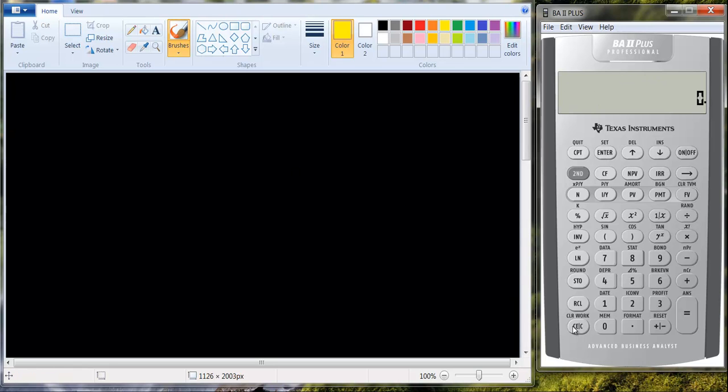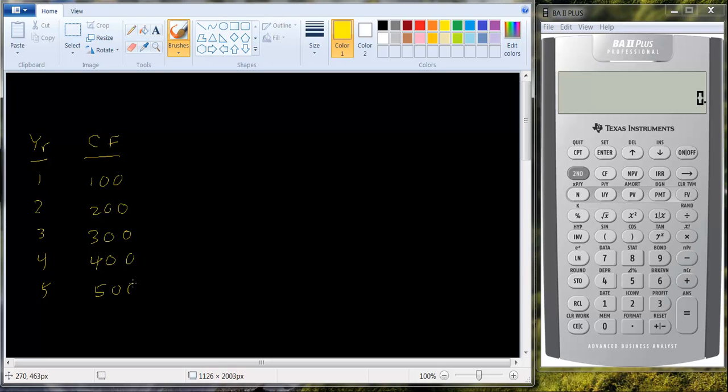Alright, let's look at an example. So let's say we have 5 years, 1, 2, 3, 4, 5, and we have the following cash flows. We have 100, 200, 300, 400, 500. And let's say the interest rate is equal to 10%. And we want to figure out, what's the future value in year 5?